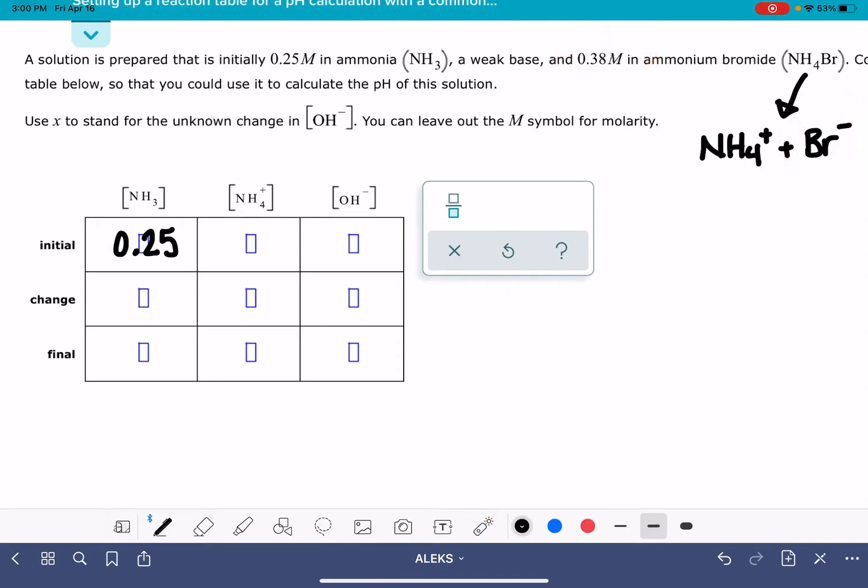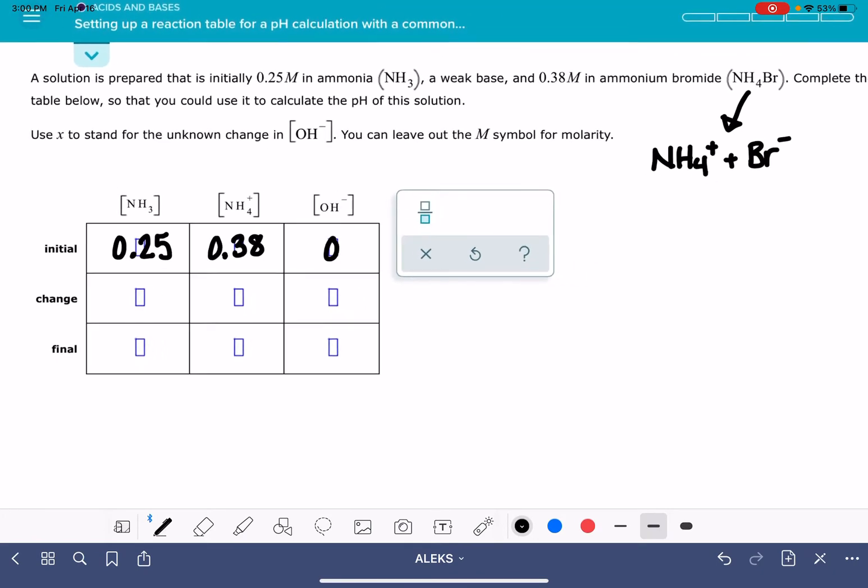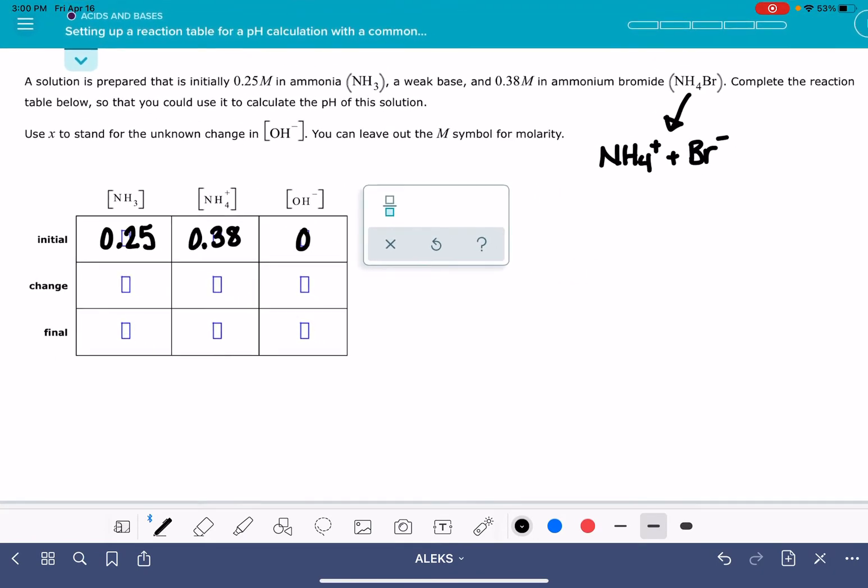and so that 0.38 molar is going to correspond to the NH4+ concentration. And initially, we don't have any hydroxide at all in this solution. And now you are just simply going to fill in the rest of this ICE table the way you normally would.